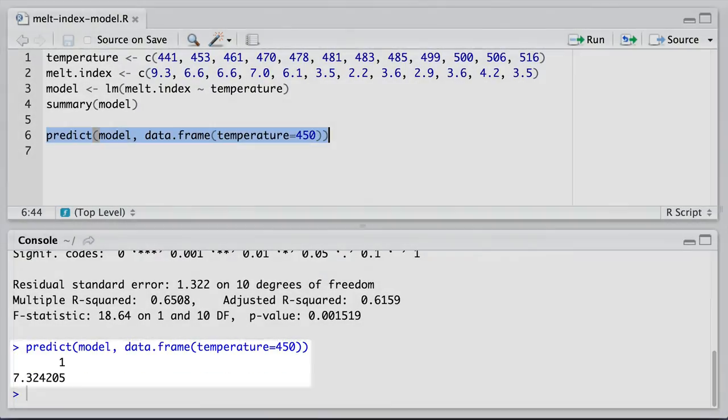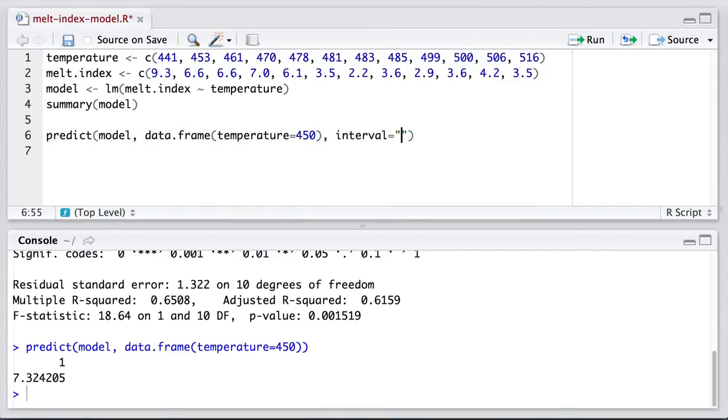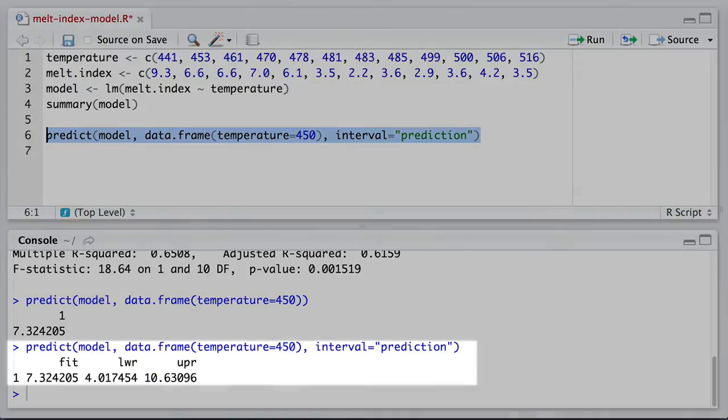We can also add a third input where we ask R not only to give us the prediction, but also to provide us a prediction interval. We get a lower bound and an upper bound for that predicted value as well.